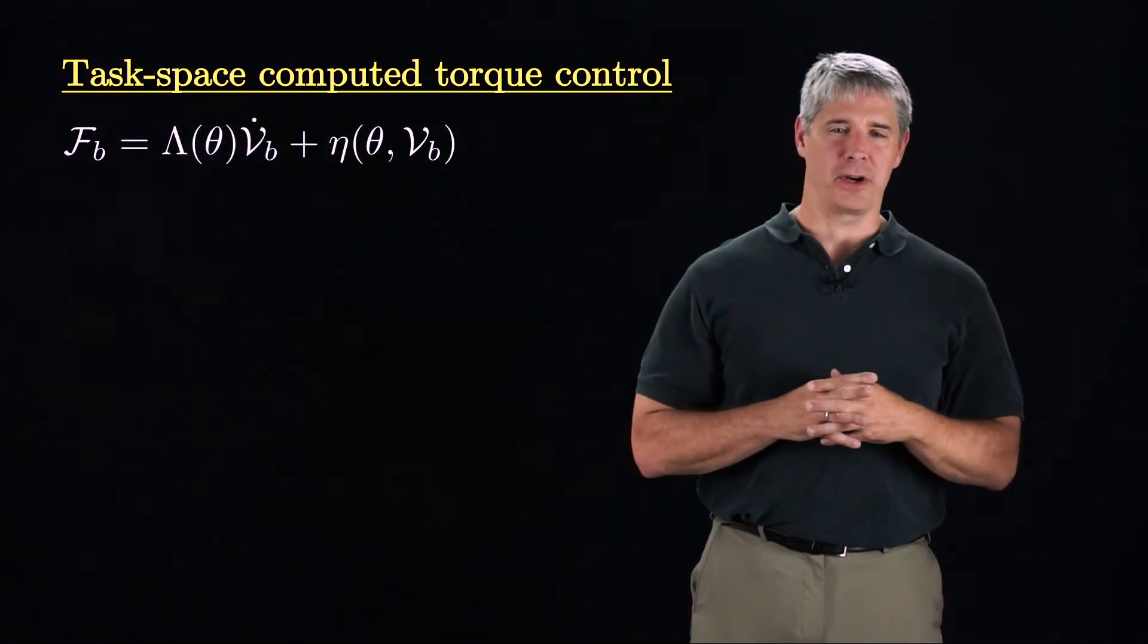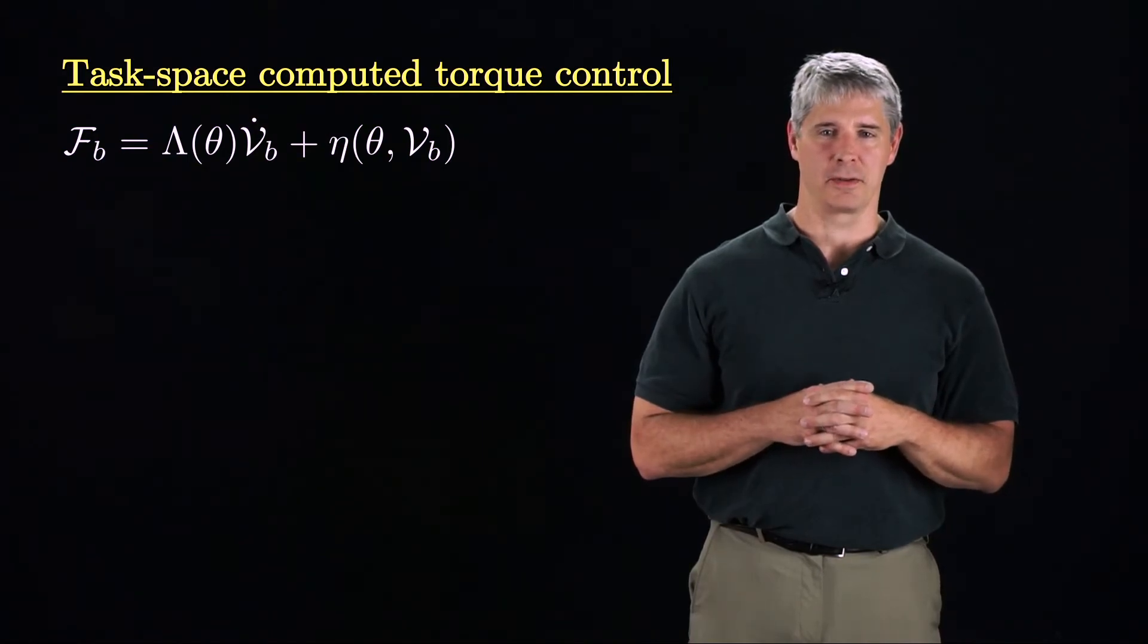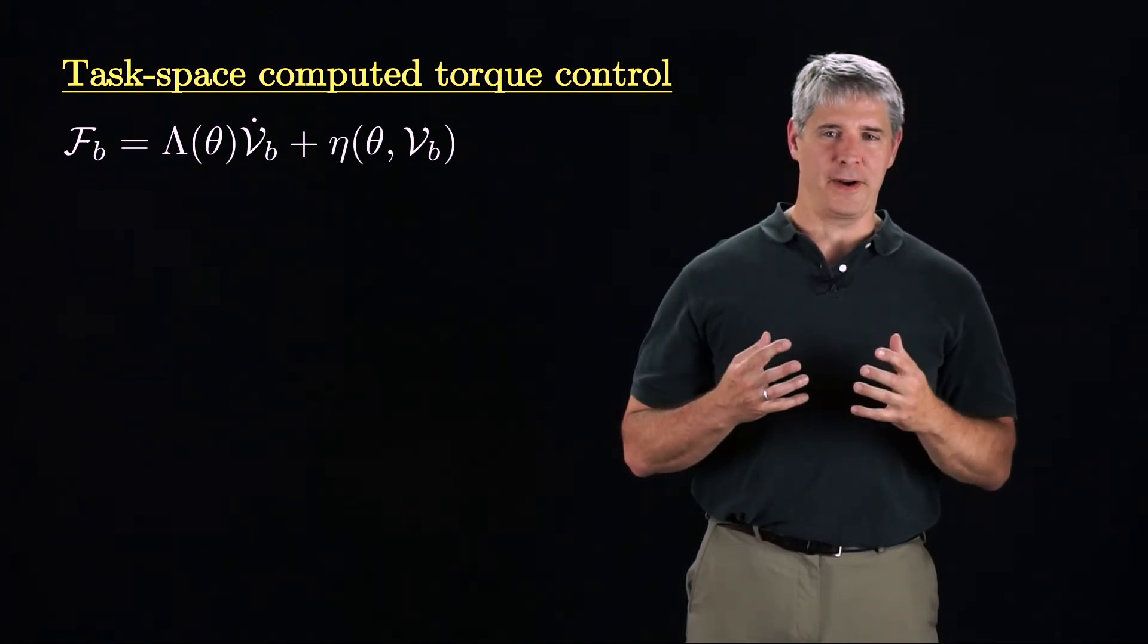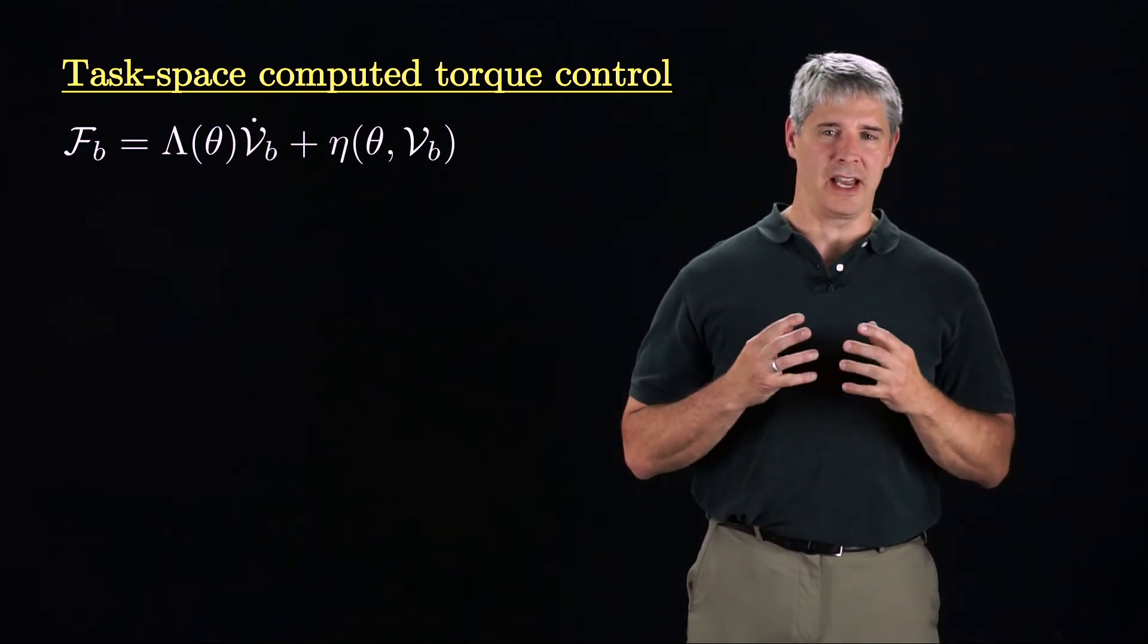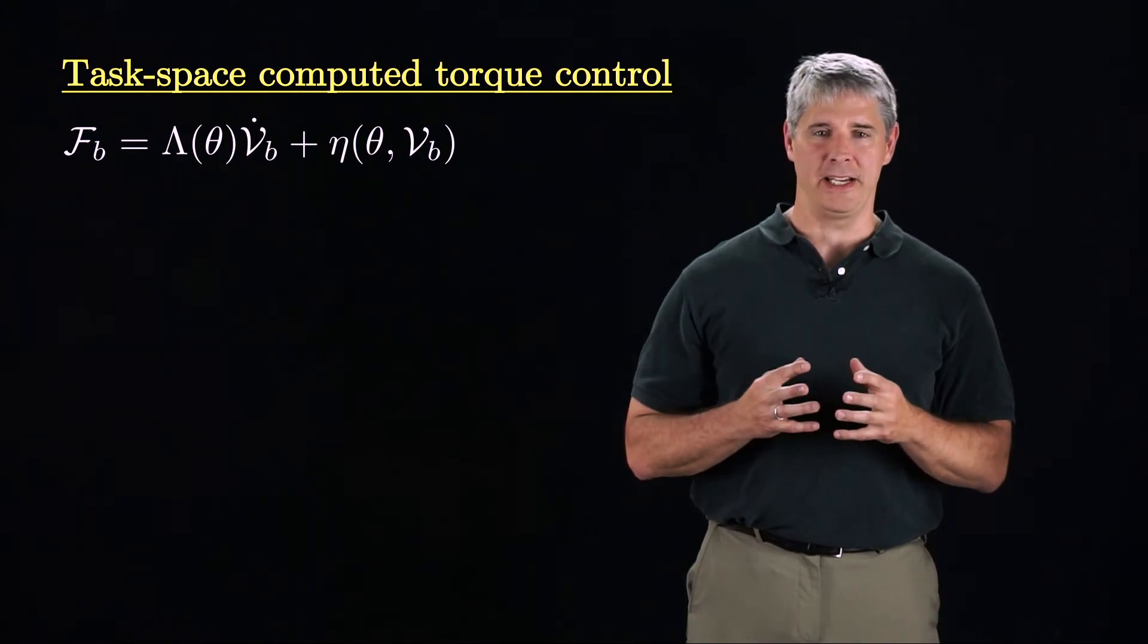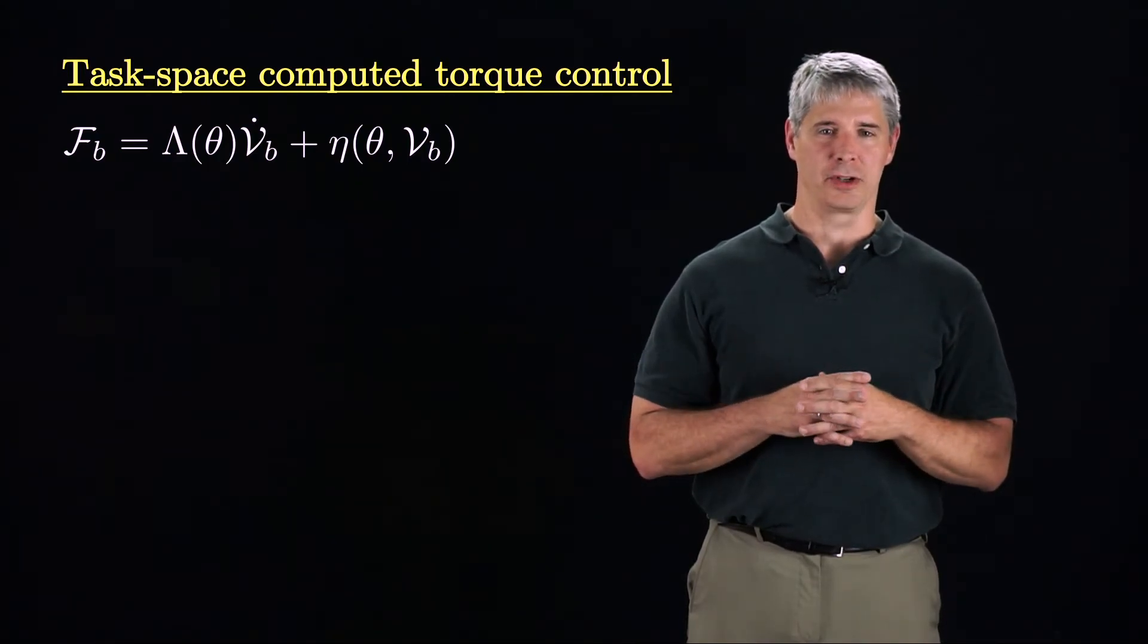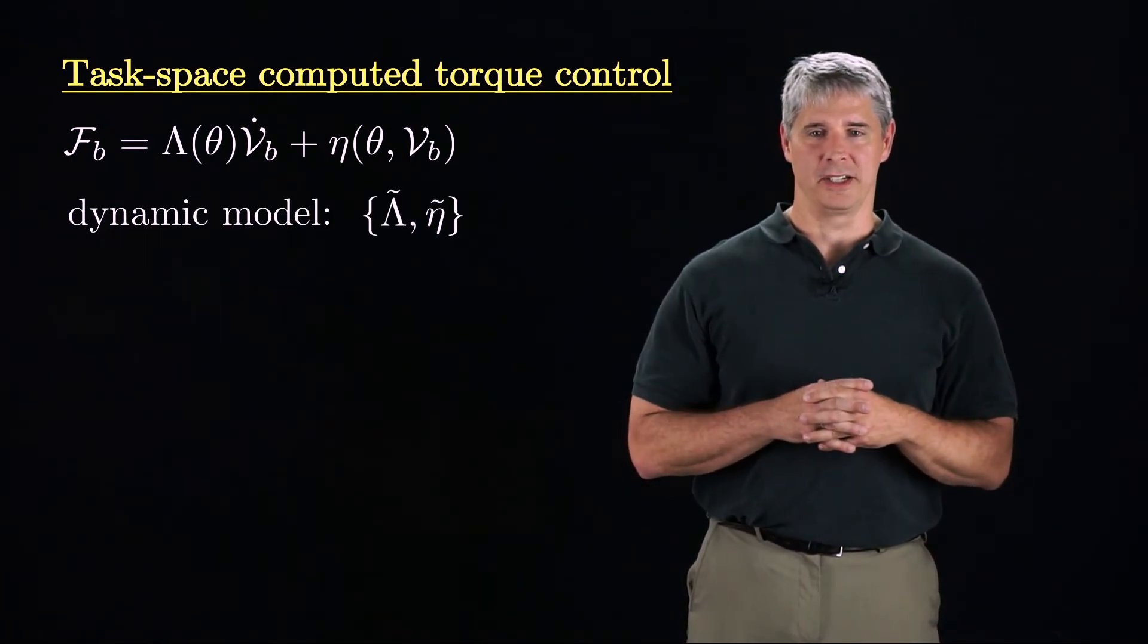Finally, we could express the computed torque control law in terms of the task-space dynamics of the robot derived in Chapter 8. The end-effector wrench FB, expressed in the end-effector frame, equals the end-effector mass matrix lambda times the end-effector acceleration VB dot plus the wrench eta due to Coriolis and gravity terms. Our dynamic model is lambda tilde and eta tilde.